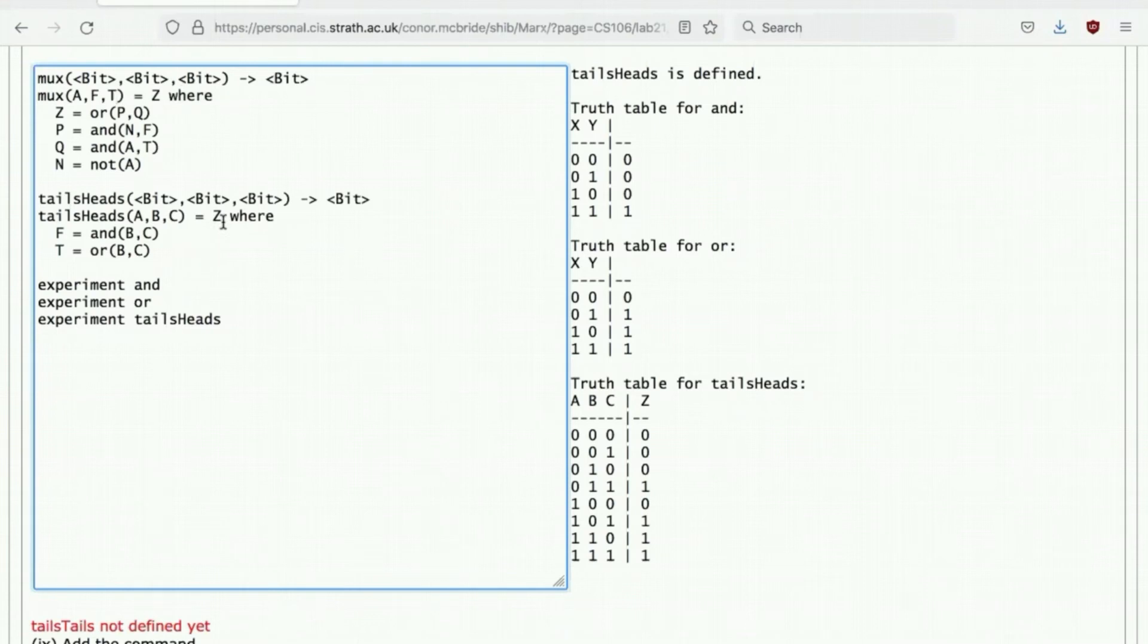And now I can say that tails heads is given by MUX A, F and T, where F and T are computed the same way as before.